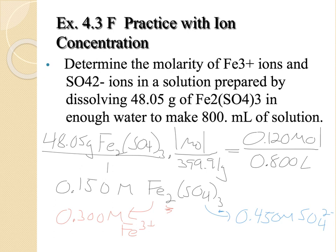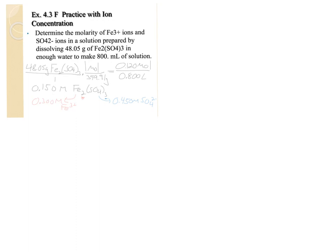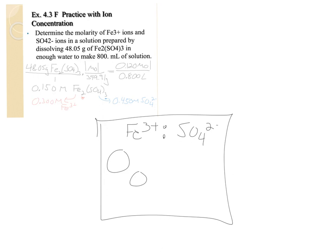So not only do we want to calculate that mathematically, this would also be something where you'd want to be able to draw. If you had to draw this in solution, you would want to draw the iron 3 ions and the sulfate ions in the correct ratio. So for every two of these you're going to draw, you're going to want to draw three of the sulfates. Because they exist in a 2 to 3 ratio. So we want to be able to visualize these as well.